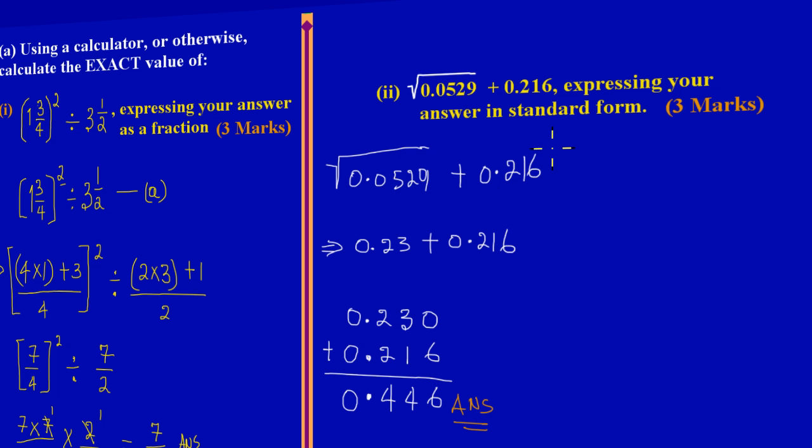When I take the square root of 0.0529 and I add 0.216 to that. If you notice here carefully what they're asking us to do, they're asking us to take our answer which is 0.446 and write our answer in standard form. In standard form.